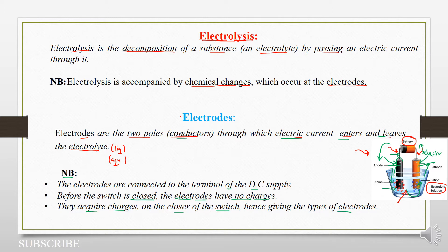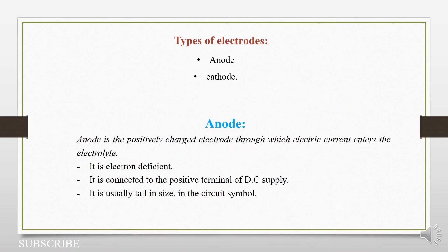We are going to look at the different types of electrodes. We should know that the different kinds of electrodes will be determined by how we have connected them to the battery. So before closing the switch, they have no charge. We have basically two types: the anode and the cathode. We have to get used to these terminologies because we need a way of identifying things. So an anode — let's start with the anode. Anode is the positively charged electrode through which electric current enters the electrolyte.